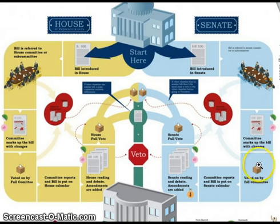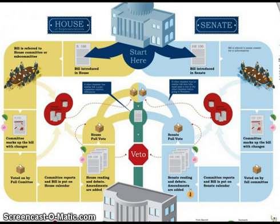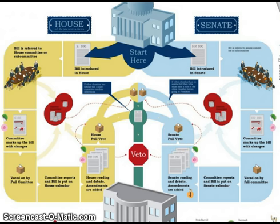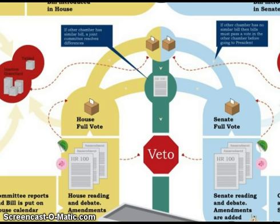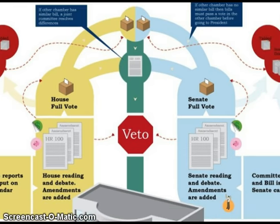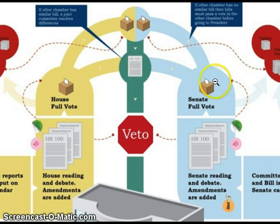Once that bill passes in the House, it will be sent to the Senate, where it goes through all the same exact steps. A lot of times, to save trouble, when the bill is introduced to the House, a very similar bill is introduced in the Senate at the same time, so both bills are moving through each side simultaneously. When both bills get to the voting point, if one house passes the bill and the other does not, the bill is dead — it has to pass both houses of Congress. Having a bicameral legislature is a great example of checks and balances.